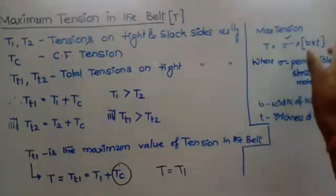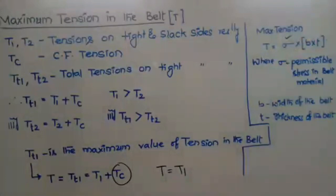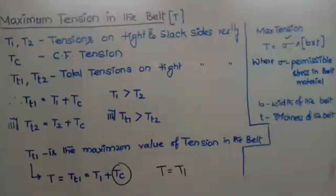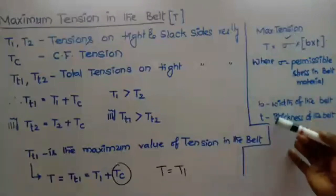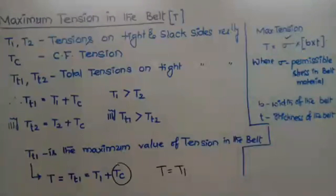The maximum tension in the belt is the maximum tensile force allowed by the belt under application. If you know this value, you can use this equation to find the required dimensional proportions. Permissible stress is in Newton per mm² or megapascals. That is how you find the belt width or belt thickness. I hope that is clear.